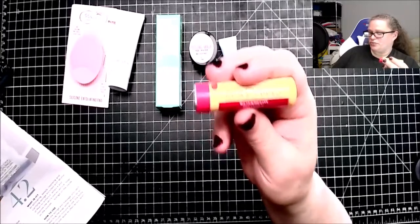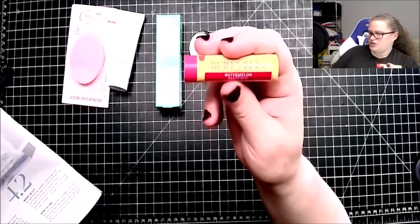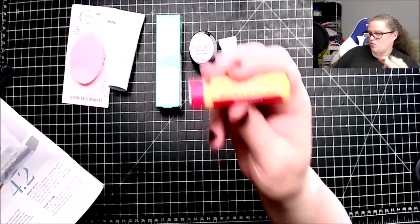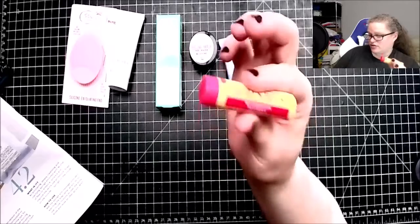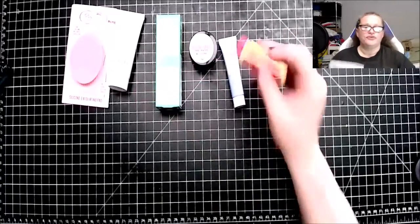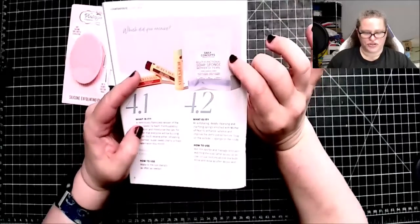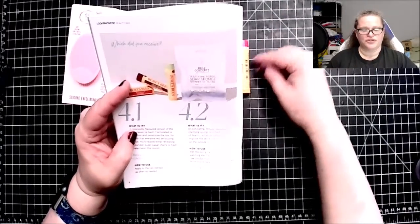A delicious flavorful version of the cult classic lip balm, formulated to condition and moisturize your lips for a pout that everyone will be buzzing about. You could receive either refreshing cucumber, super sweet cherry, or fresh watermelon. This month it has beeswax and coconut oil. If you didn't receive this, you should have received a multi-functioning soap sponge.